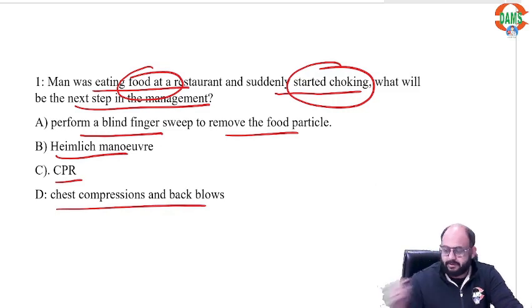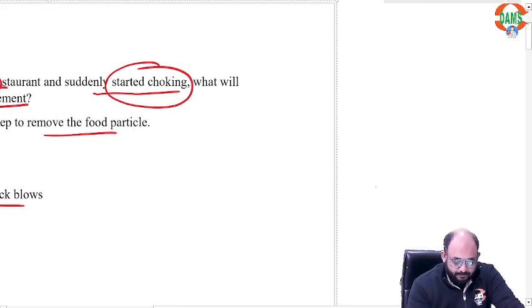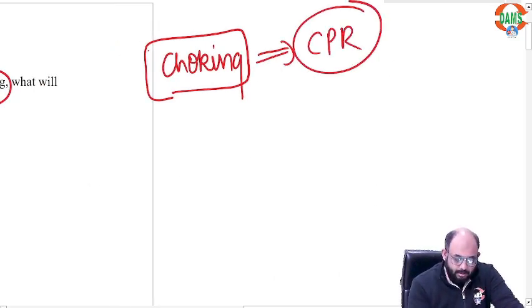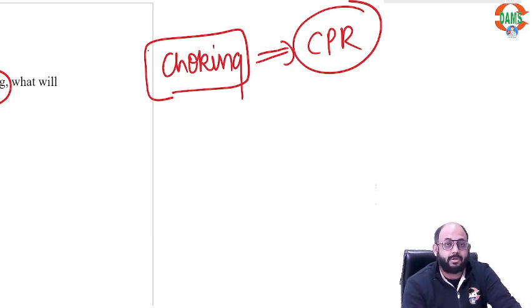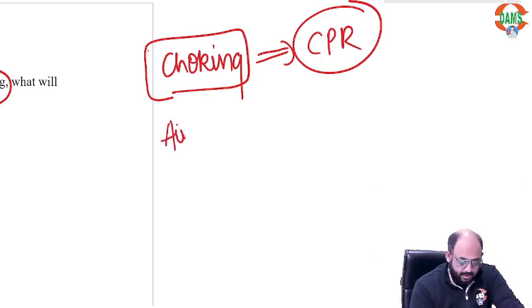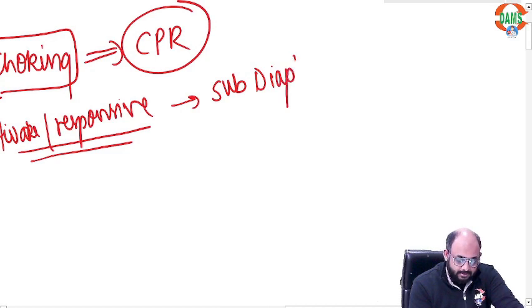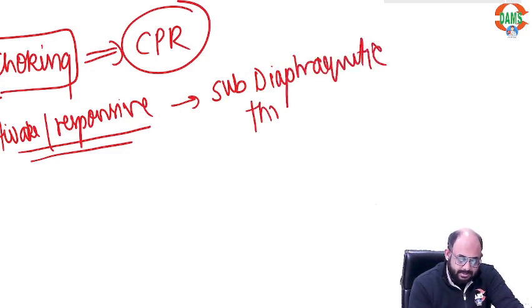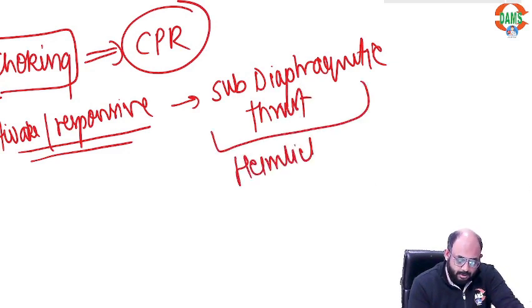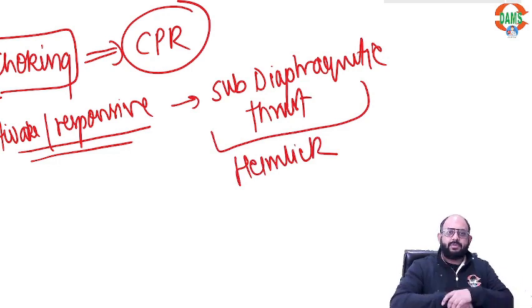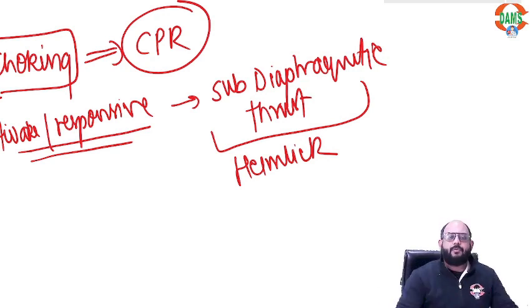This is a classical case of choking, and it's a surrogate topic of CPR, which is one of the most important topics for your exam. If the person is awake or responsive — meaning they are still telling you something is wrong — you will perform sub-diaphragmatic thrusts, also called the Heimlich maneuver. You put a fist below their sternum at the level of the diaphragm and give compression so the foreign body is expelled out.